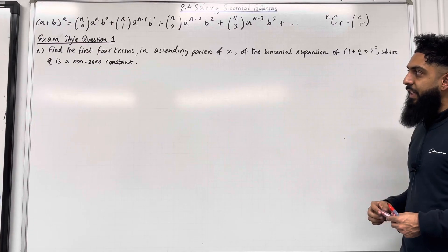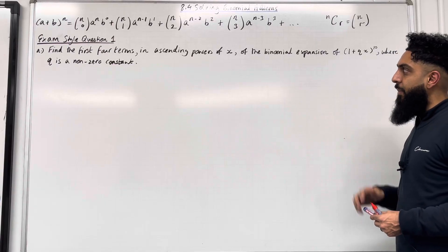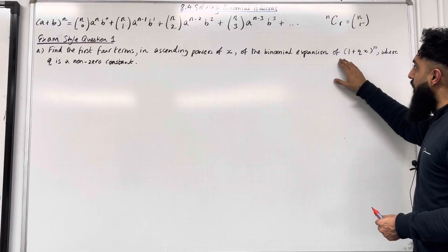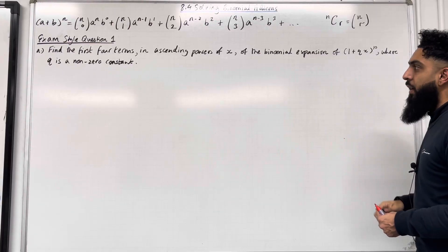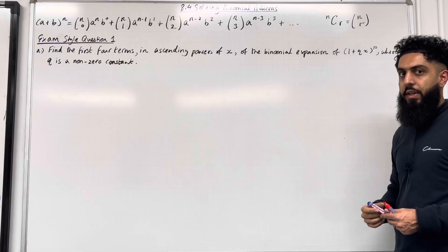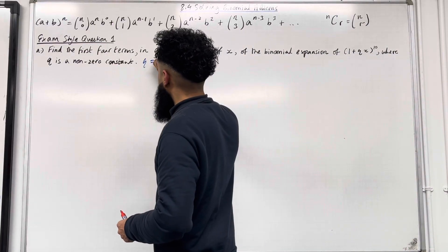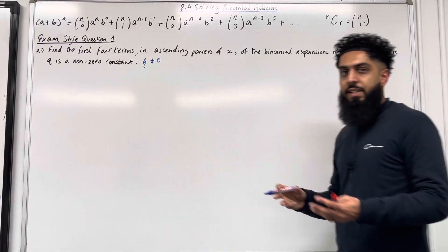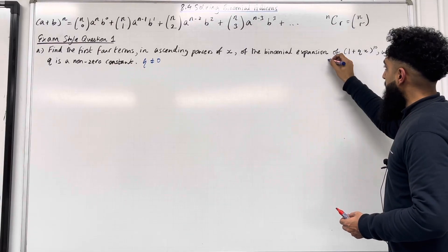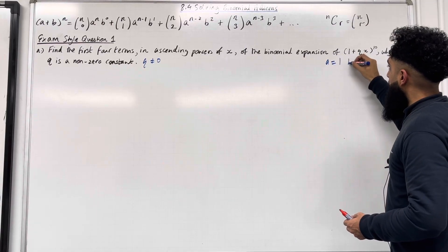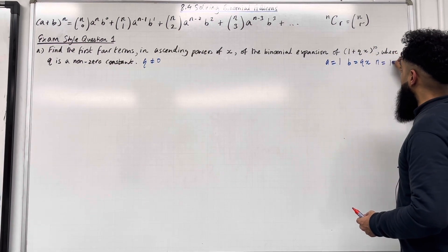Let's have a look at exam style question 1, Part A. Find the first four terms in ascending powers of x of the binomial expansion of (1 + qx) to the power 10, where q is a non-zero constant — so q is not equal to 0. Now we need to identify a, b, and n. So a is equal to 1, b is equal to qx, and n is equal to 10.